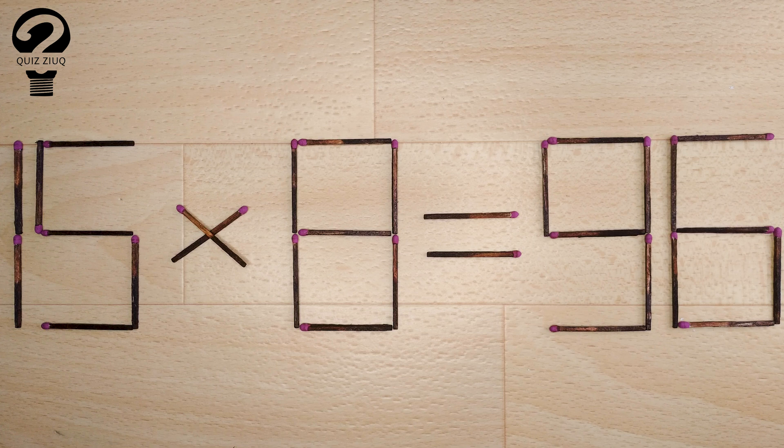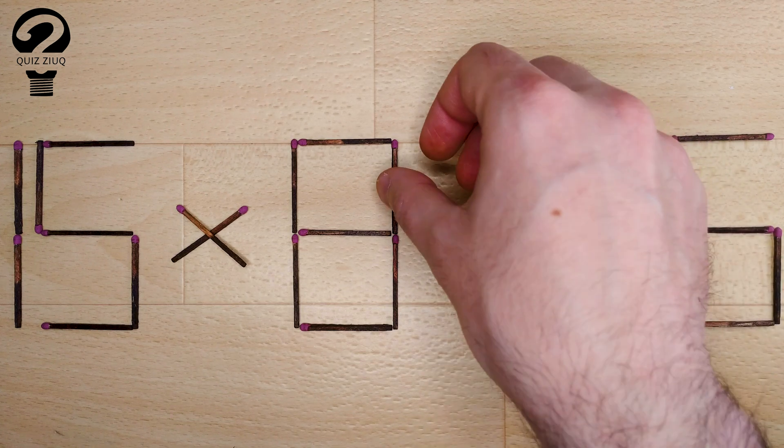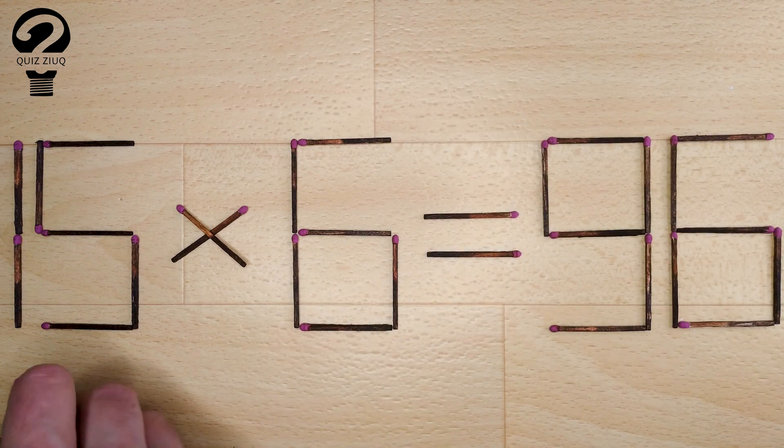How is this little puzzle solved? For this, we just need to move one matchstick. And now, when we check, 16 times 6 equals 96.